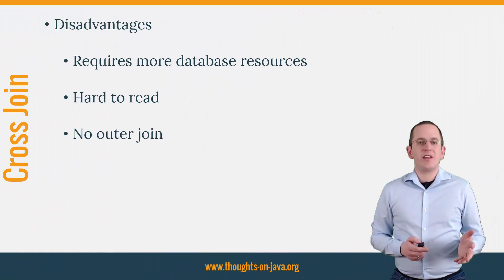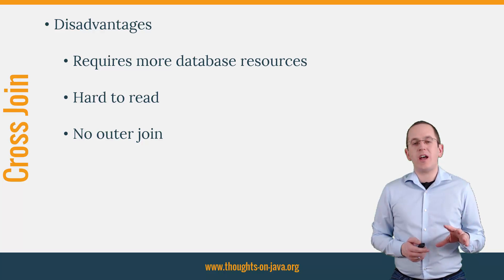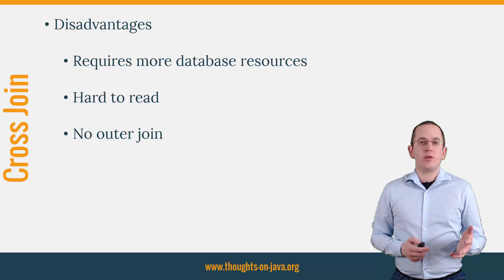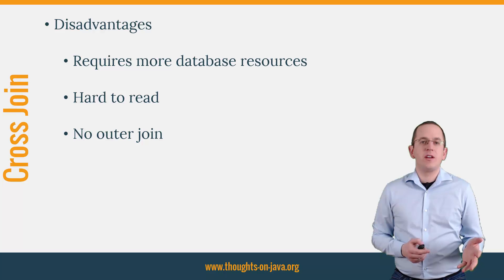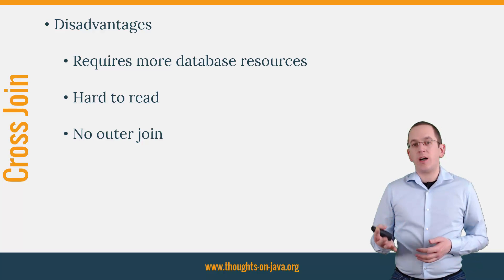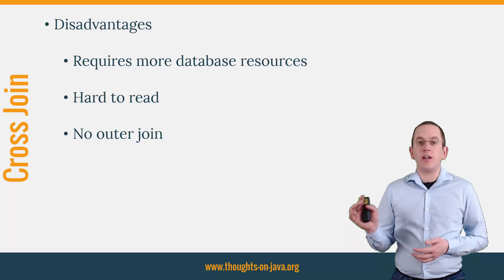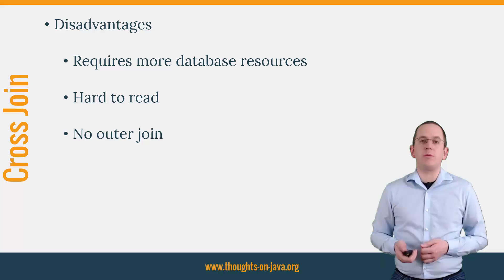Let's quickly summarize the disadvantages of the cross join before I show you the Hibernate feature. The database needs more resources to create the Cartesian product than it would use for a simple inner join. It is not as easy to read as an inner join, especially if the where statement gets complex, and is often the cause of additional bugs. And you cannot create an outer join which, for example, returns all person entities and, if there is a matching record, also their phone number.